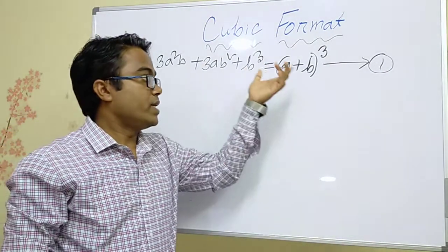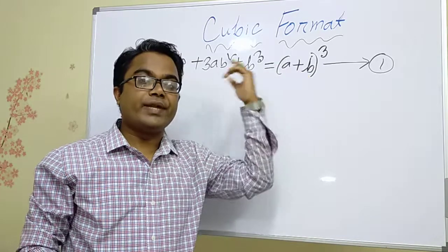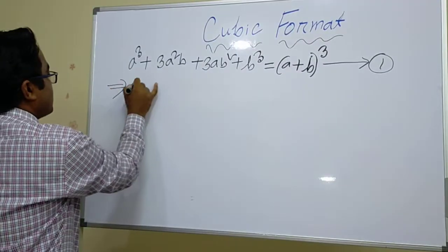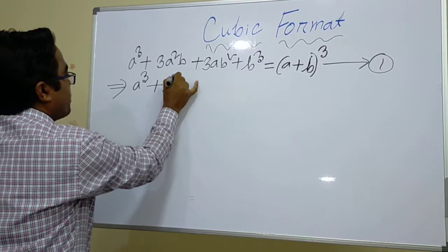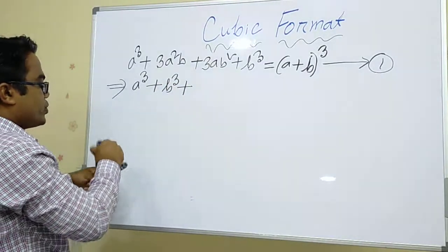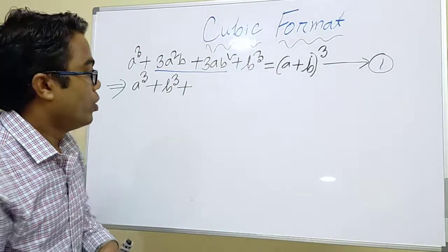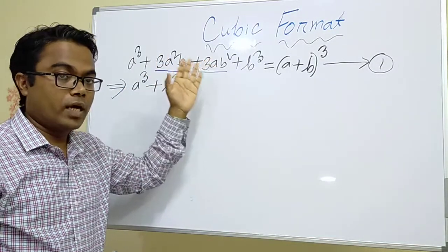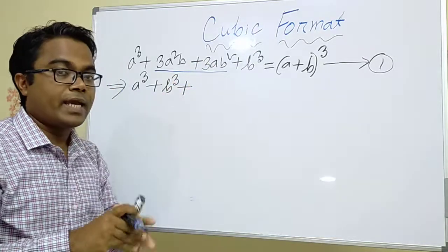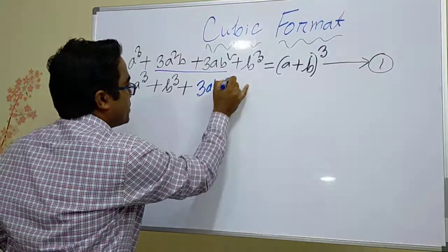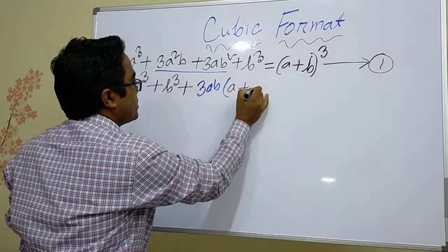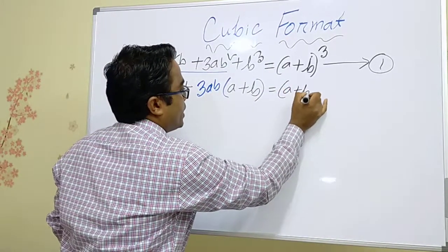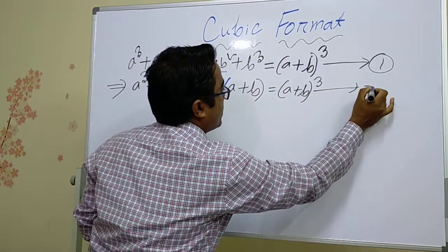Actually, this (a + b) whole cube can also be written in one more format: a cube plus b cube plus... Because if we see these two middle terms carefully, both of them have 3, one a, and one b in common. So if we take 3ab as a common factor, the remaining part will be (a + b), giving us (a + b) whole cube. This is equation number 2.